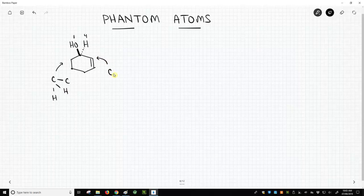How about this carbon? This carbon is attached to another carbon, the bottom of the alkene, and it's attached to a hydrogen, but what do we do for its third bond? Well, this is where phantom atoms come into play.